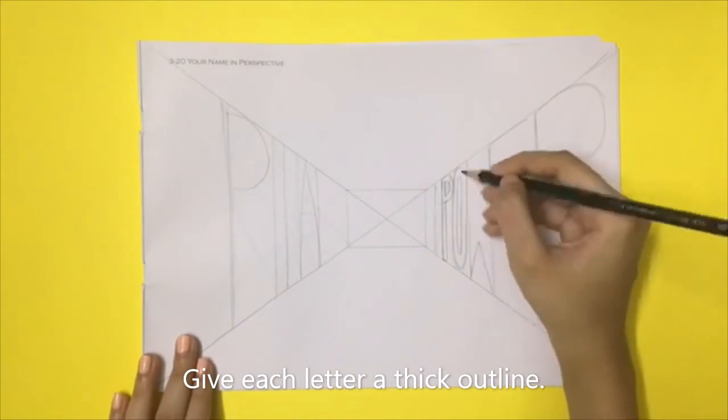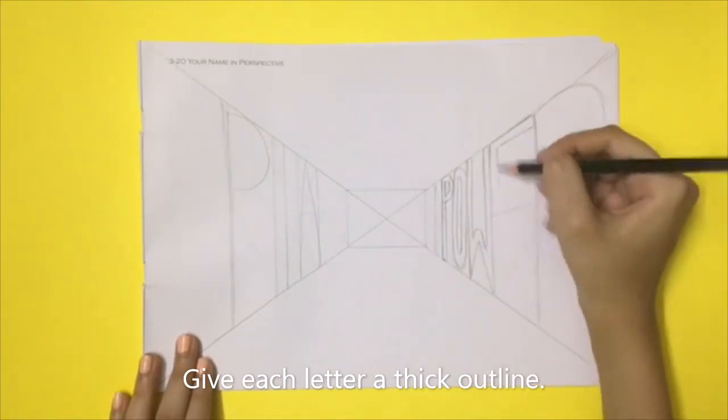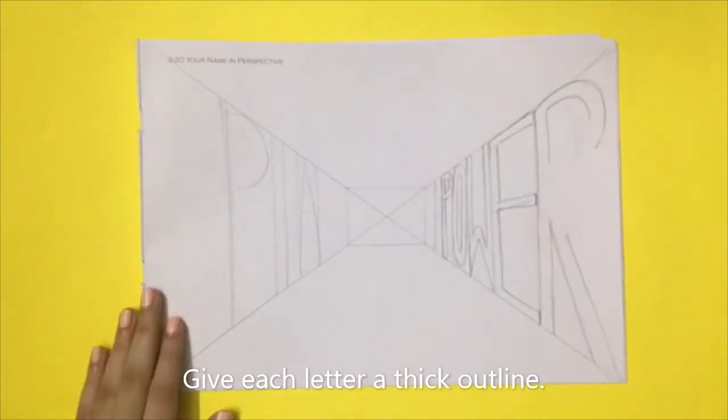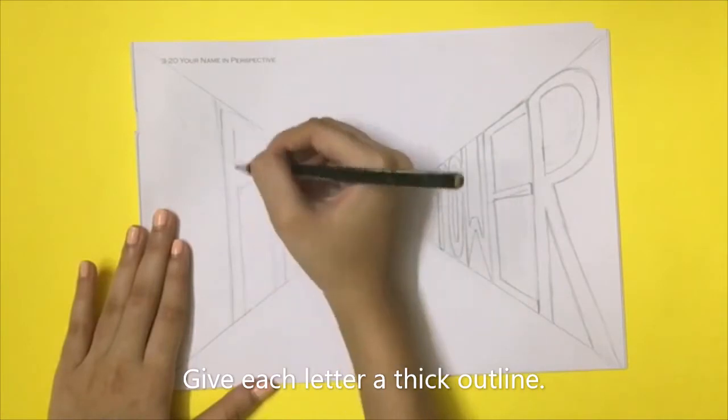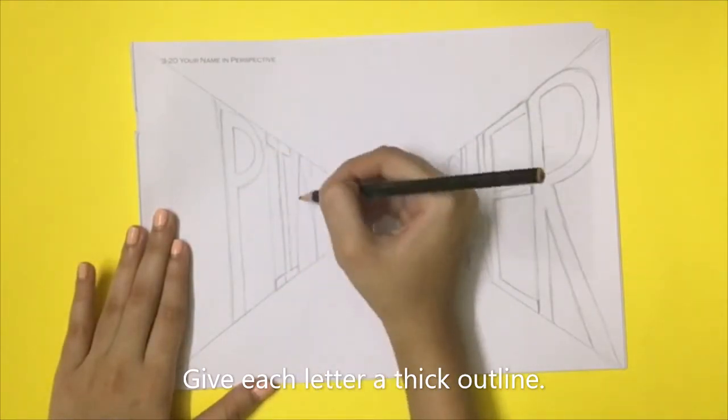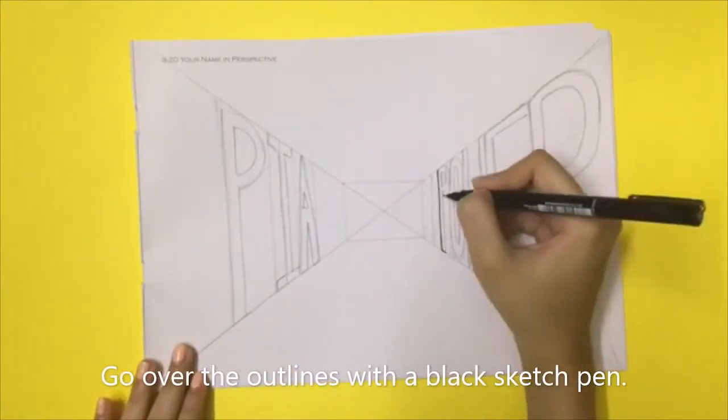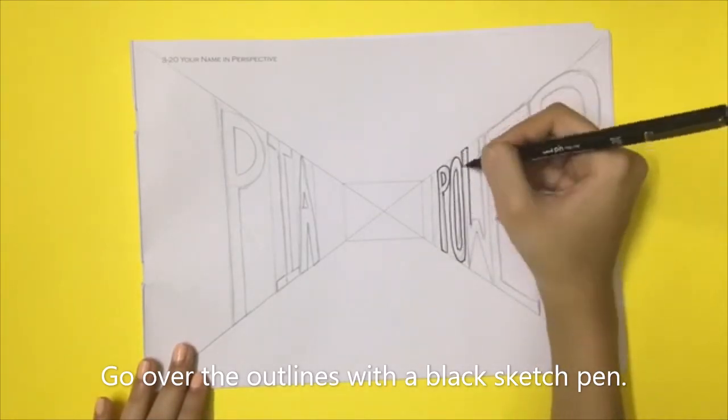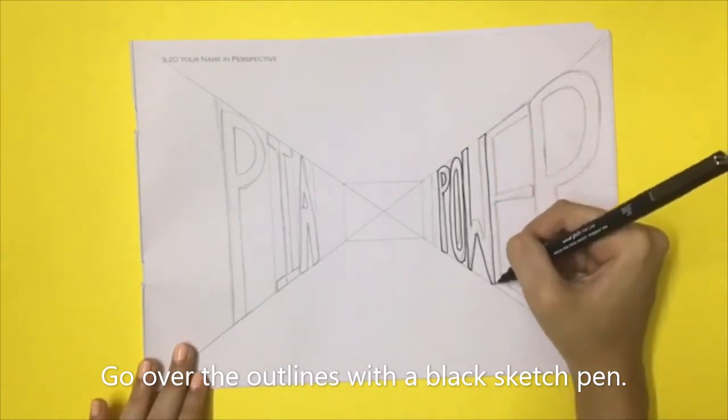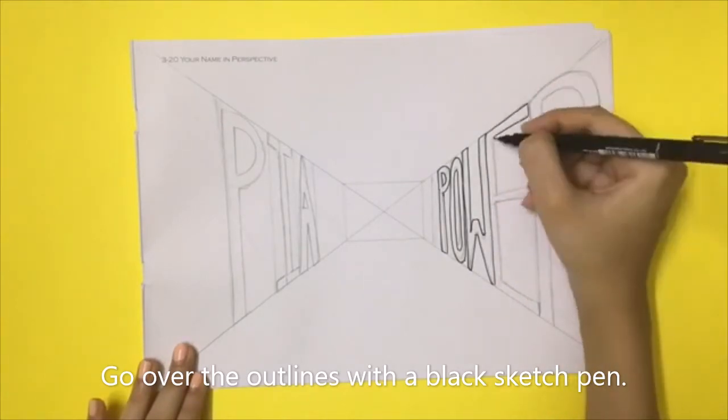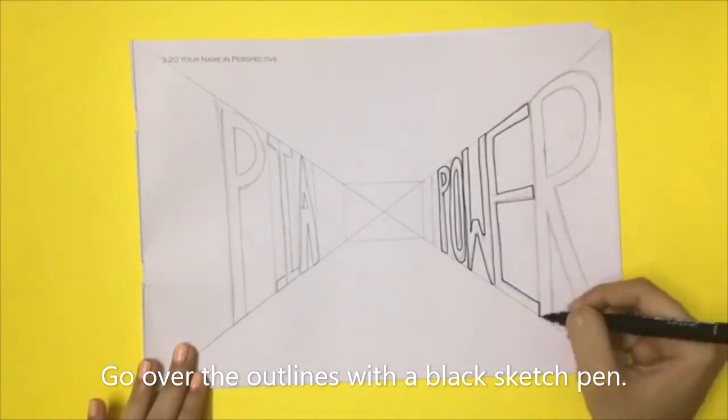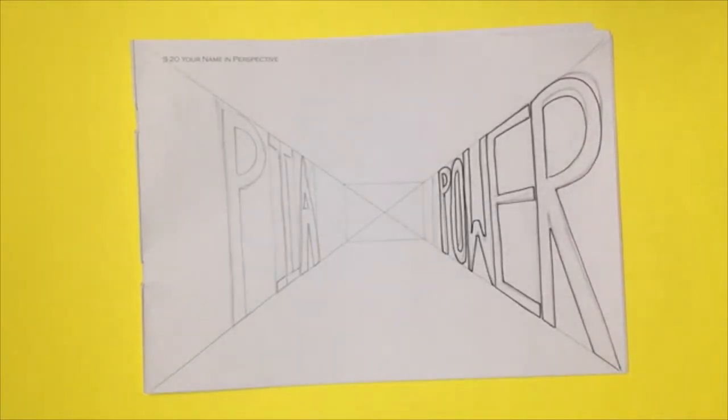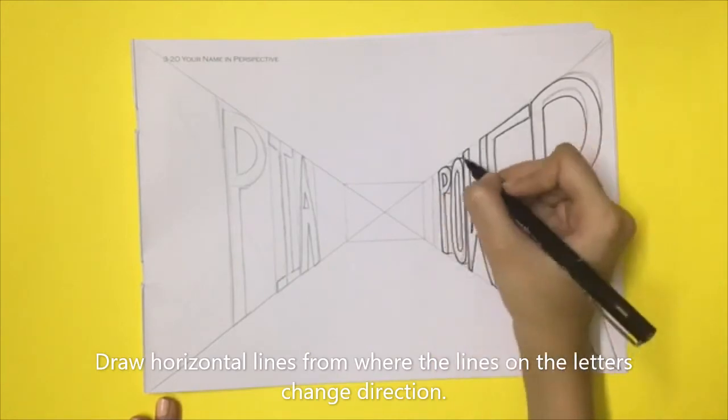Give each letter a thick outline. Go over the outline with a black sketch pen. Draw horizontal lines from where the lines and the letters change direction.